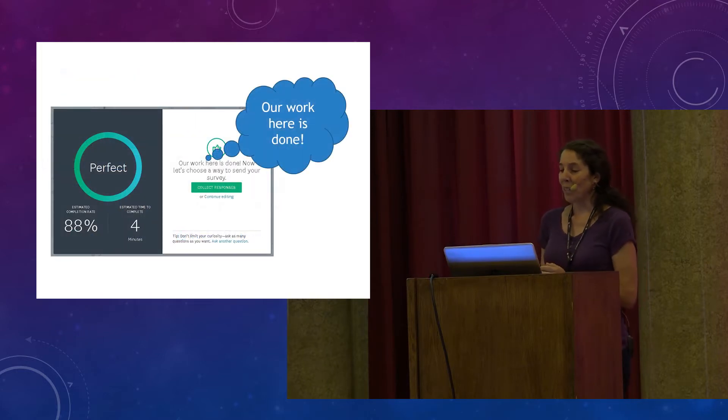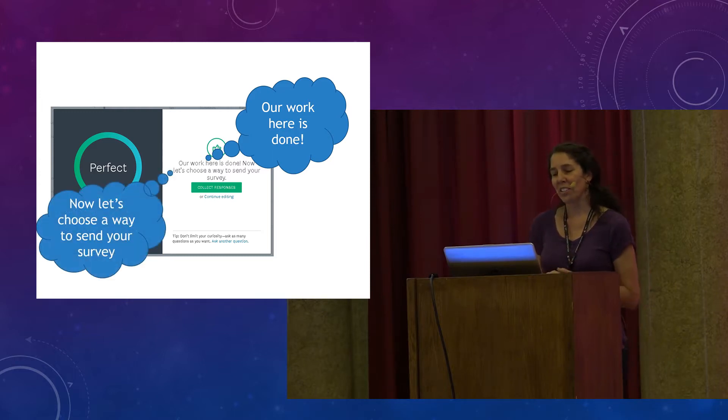Here's an example of microcopy in an app. "Artwork here is done." It's personable and friendly. The exclamation point indicates enthusiasm and energy. And the contraction in the second sentence, "Let's choose a way to send your survey," is clearly more friendly than the more formal let us.